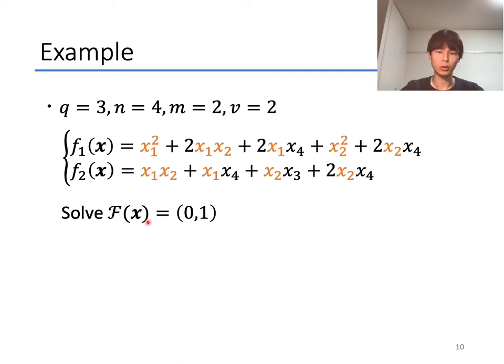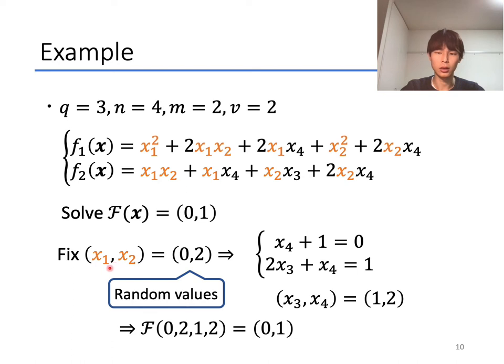This is an example for the central map F of UOV. Here, q equals 3, n equals 4, m equals 2, v equals 2. And actually, these two polynomials f_1 and f_2 do not involve quadratic terms of x_3 and x_4. First, randomly fix x_1 and x_2 to 0, 2. Then, the polynomial becomes a linear system and x_3 and x_4 are easily found to be 1, 2. As a result, the solution of this system is 0, 2, 1, 2.